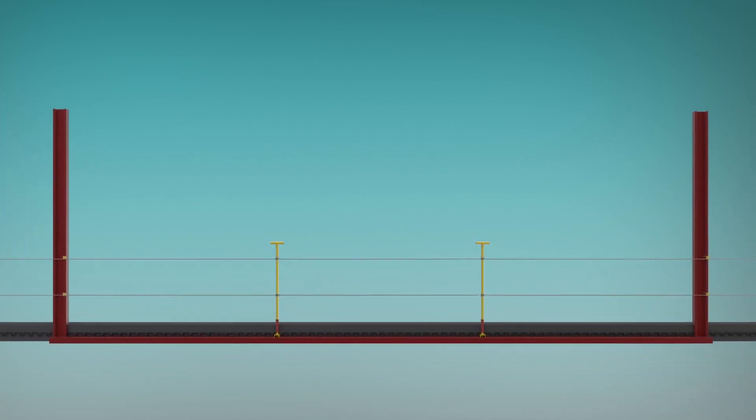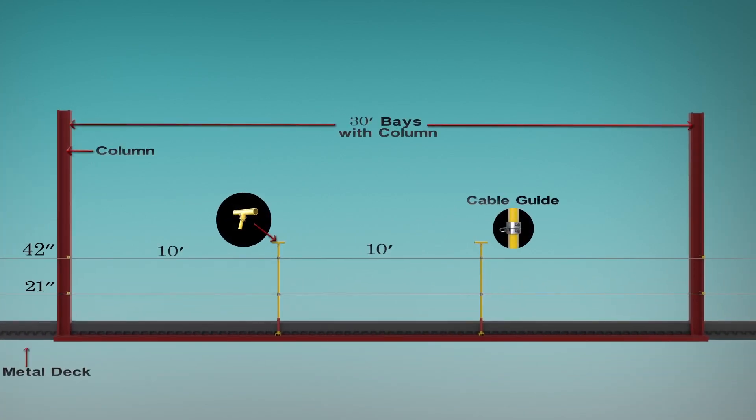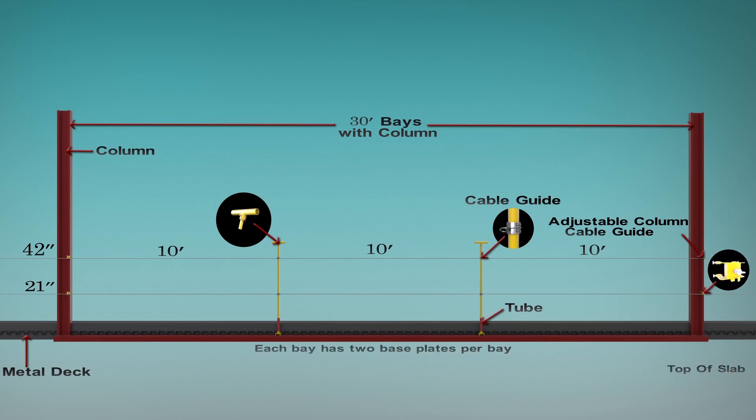For a 30 foot bay, two base plates need to be attached to steel beam prior to post installation at 10 foot OC by screwing, welding, applying adhesive or using embeds for concrete.